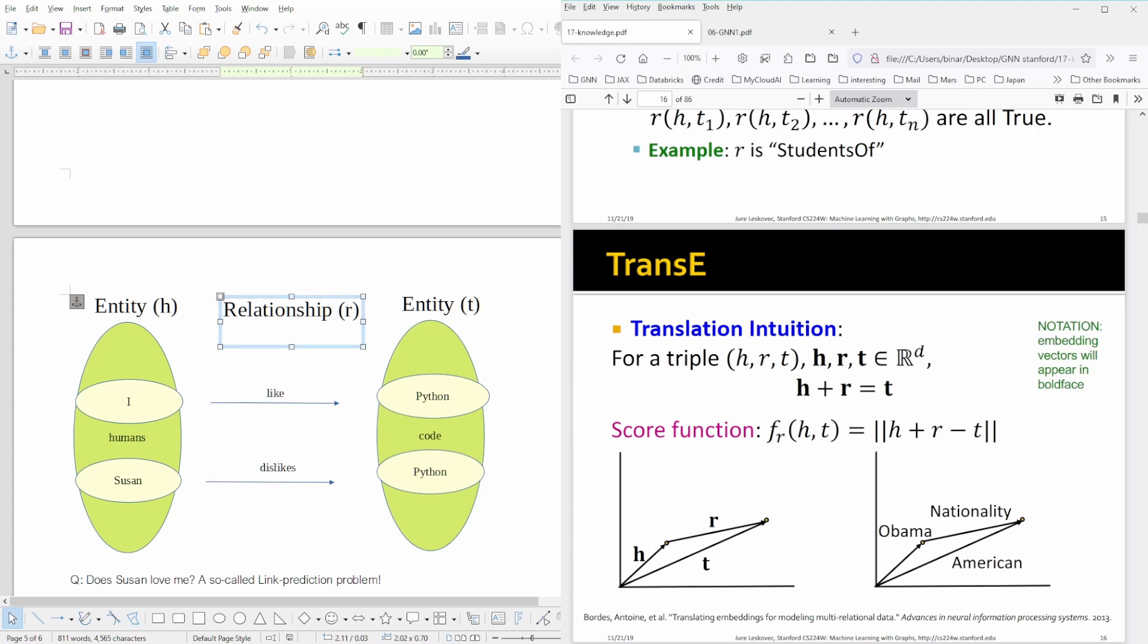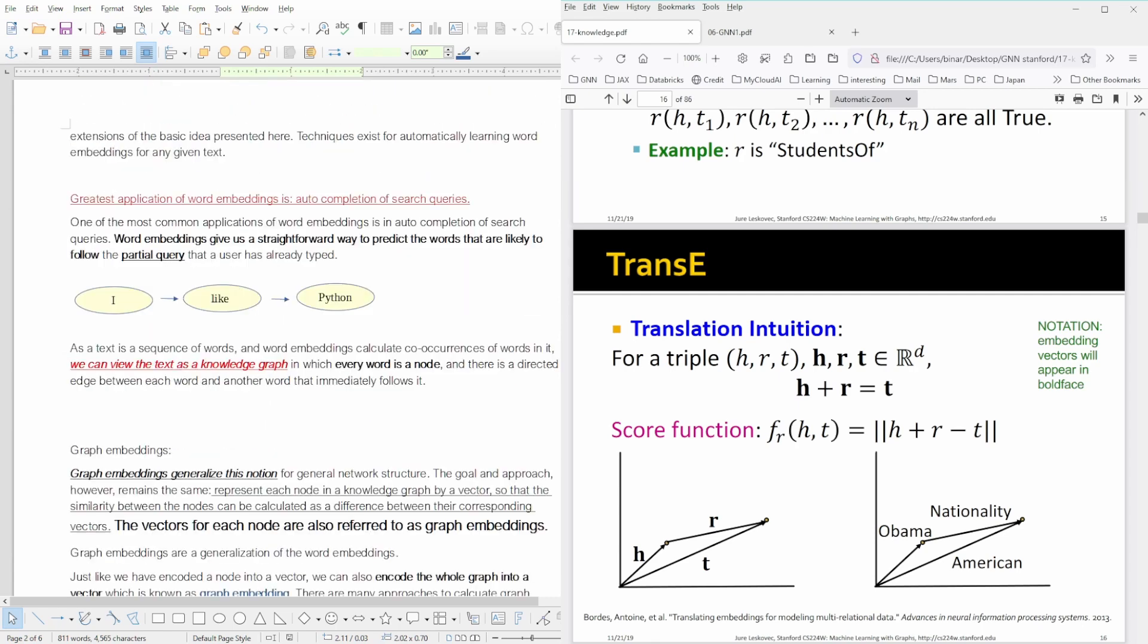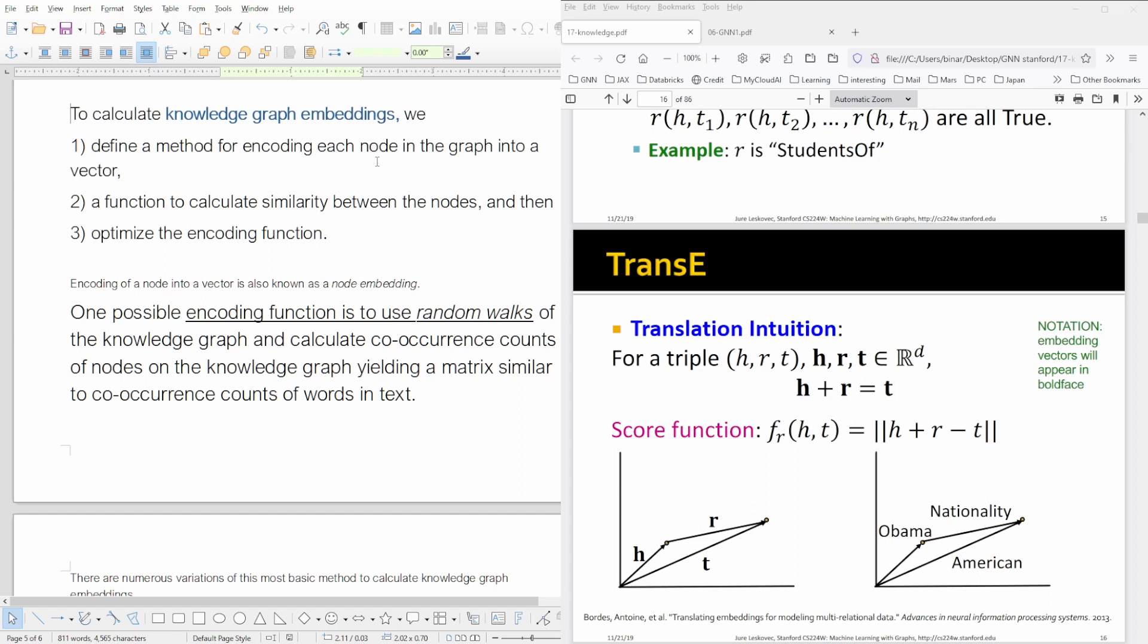You can define this as a score function, and then you can iterate over it and define the new mechanism and so on. Maybe I should show you something else before we start this. To calculate knowledge graph embeddings, this is exactly what we are doing now. There's a three-step methodology: First, you define a method for encoding each node in the graph in a vector—this is what we have done, h and t. And then you define a function to calculate the similarity between the nodes. This was by node embedding, encoding our encoder function to the embedded space.